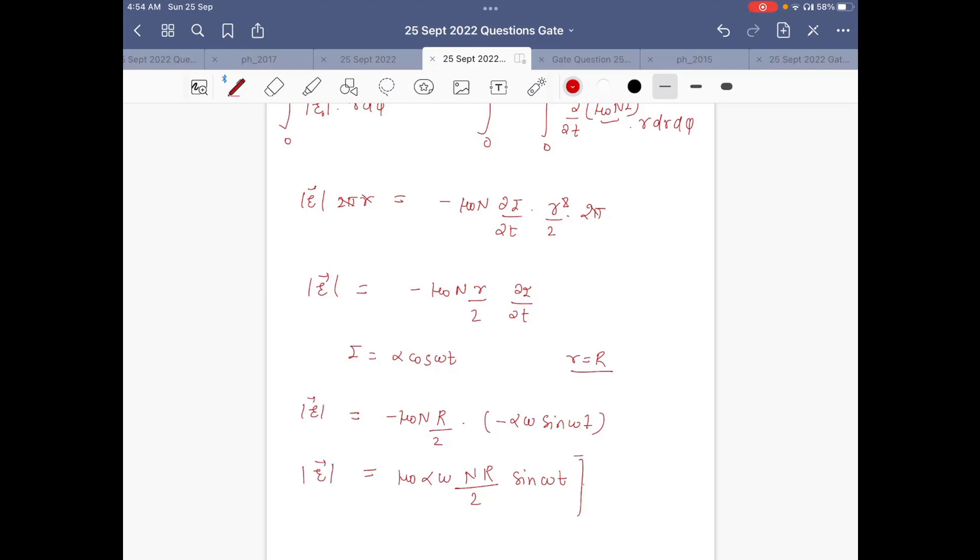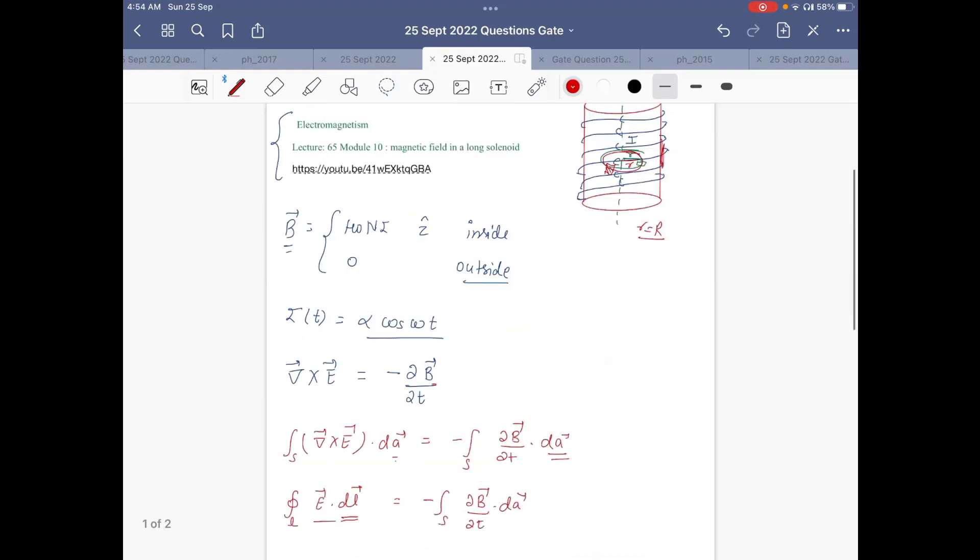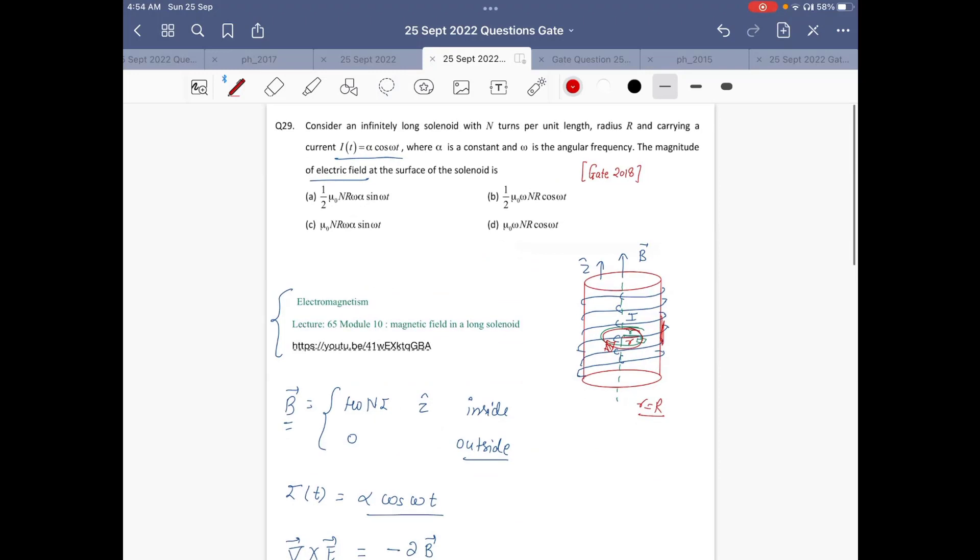So this is the magnitude of E field at the surface of the solenoid: (μ₀ α ω N R)/2 sin ωt. So this is the correct answer here. Thank you.